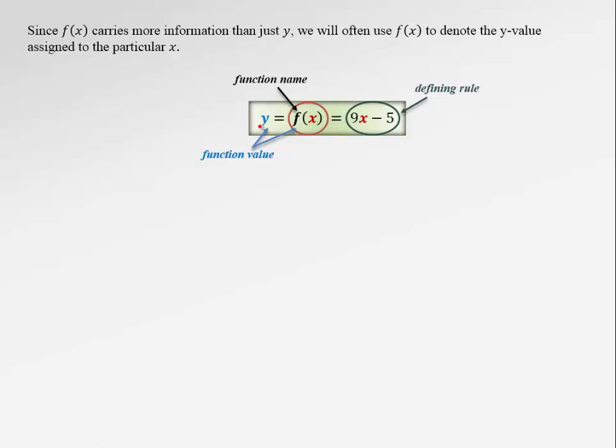So again, instead of y, we're going to write f(x) and f is just the name of a function. We can name it as f or some other letter. f is the most popular, but you could also use g or h or any other letter. So that will be a name of a function, just this letter f. x is the input of the function and f(x) is the output or function value. This really means the same as previously the y value. Here the function is defined by our example 9x-5.